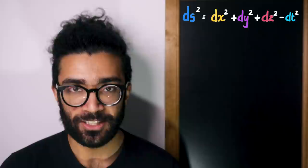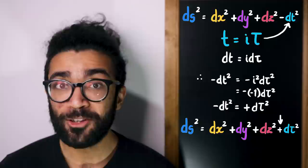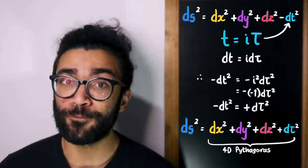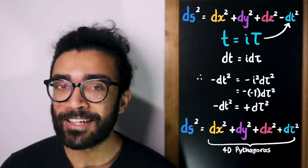But if we now take the expression for this interval, and we make the imaginary time substitution t is equal to i tau, we see that the negative sign for the time part of this expression goes away. Now the mathematics of this expression looks a bit like a four-dimensional extension of Pythagoras' theorem. If we had four spatial dimensions, then this is how we'd find the spatial distance between these two events. This makes the whole mathematics much easier to deal with, and can actually allow us to find certain solutions that would have been very tricky without making the imaginary time substitution.